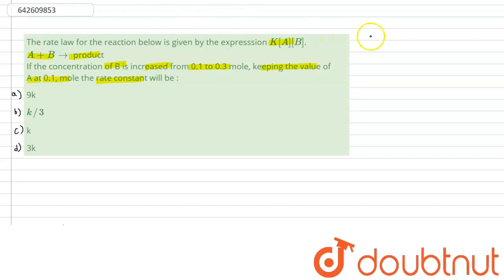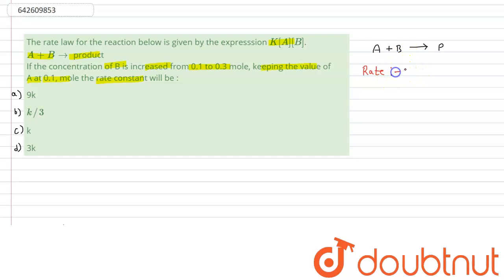The reaction is A plus B giving the product B. For this, the rate law becomes R equals K into concentration of A and concentration of B. This is the rate law for this reaction.